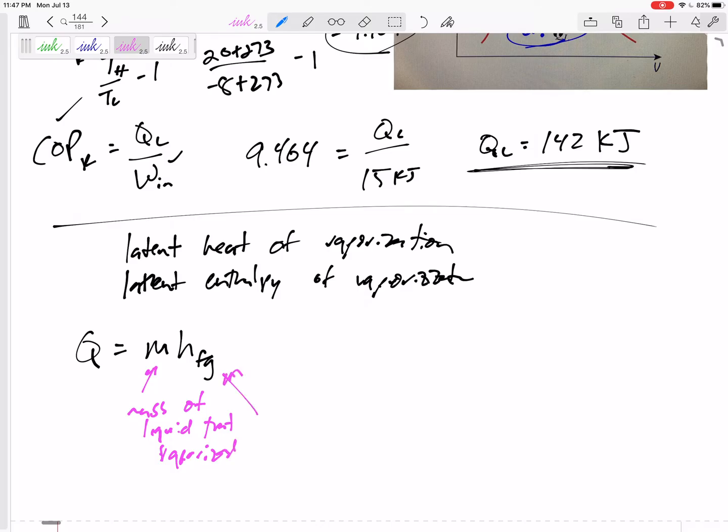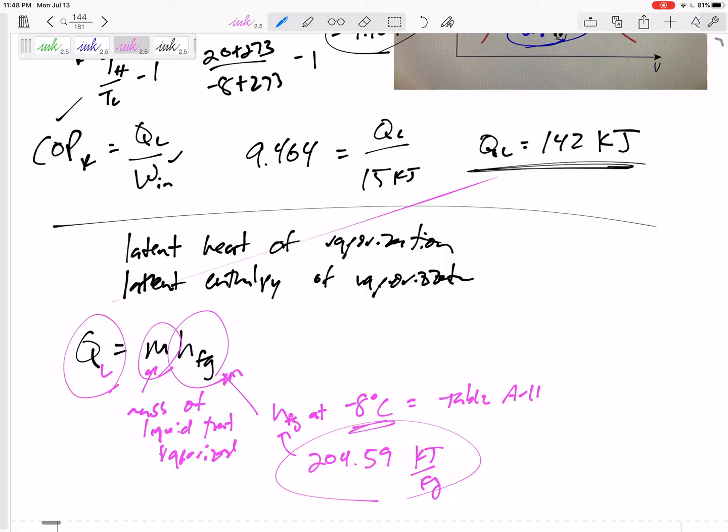This is the HFG at -8 degrees C for refrigerant. So for refrigerant, if I go to table A-11 because it's refrigerant, I can find the HFG: 204.59 kilojoules per kilogram. That's the difference in the HG and the HF. Every little bit of liquid going from F to G has to be absorbing that much enthalpy, absorbing that much heat. If we take the amount of mass that goes from liquid to vapor times the change in enthalpy as it goes from liquid to vapor, then we can find the Q, and that is the QL we just found.